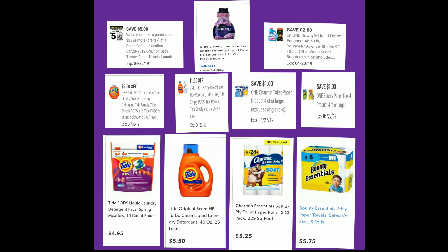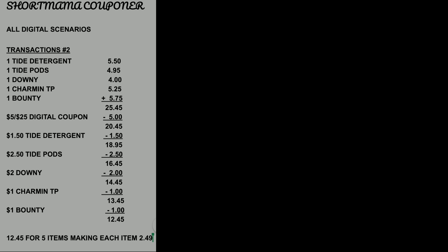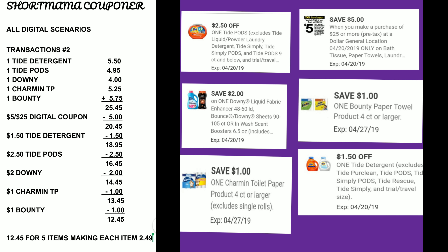We're going to clip the $2.50 exclusive coupon for Tide Pods, the $1.50 exclusive coupon for the Tide detergent, the $1 off coupon for Charmin, the $1 off coupon for the Bounty paper towels, the $2 coupon for the Downy, and your $5 off of $25. Those are the coupons we need to clip — I'll show you a close-up of everything.